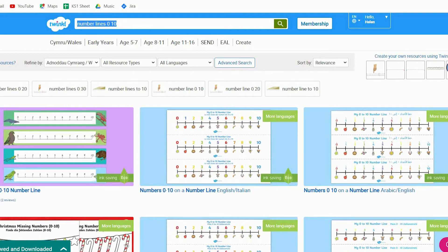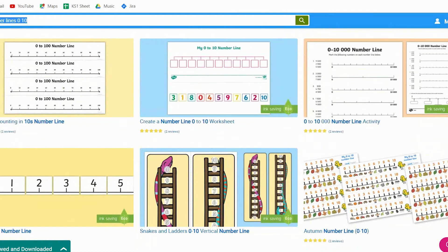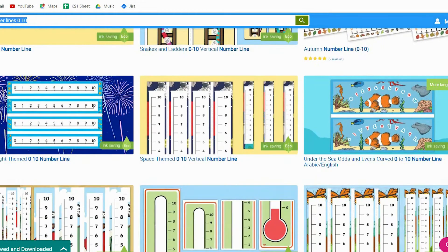Take a look at the Twinkle website for all of the different number line resources. There are ones to suit everybody - if you want one with a specific character, or if you want a vertical or horizontal one, or one to do with a thermometer, anything that you need.